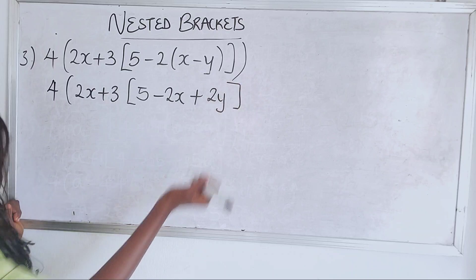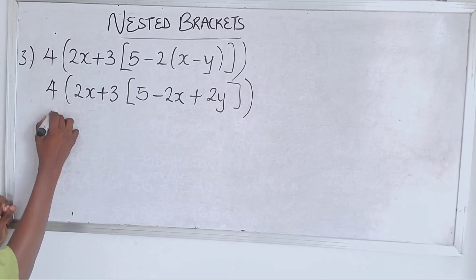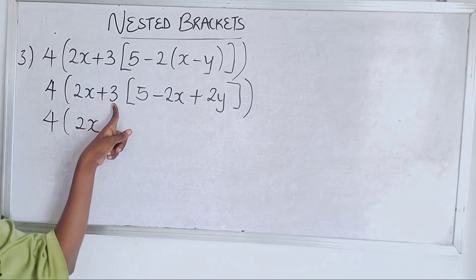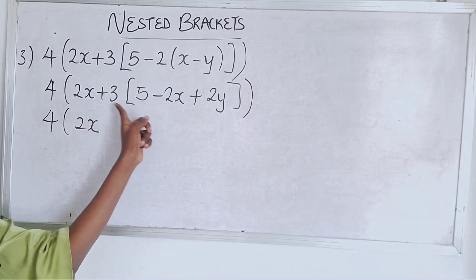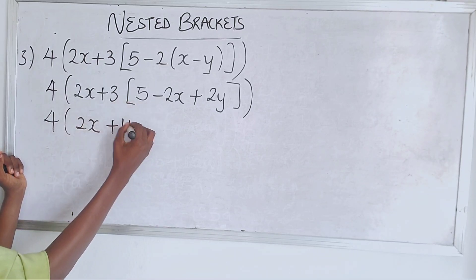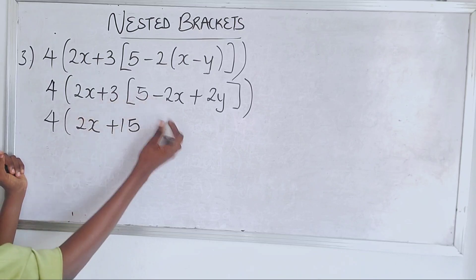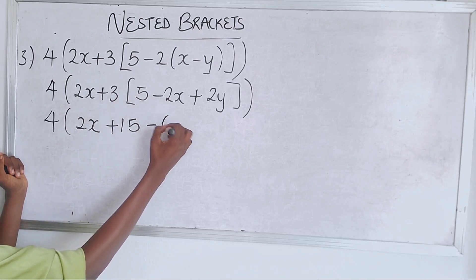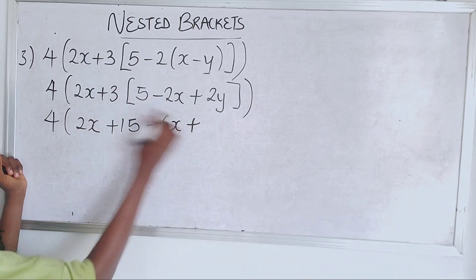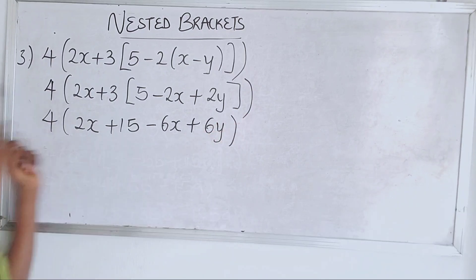Moving to the square bracket. We have two x from before. To open the square bracket, we use the number closest to it, which is plus three. Plus three times five is plus 15; plus three times minus two x — plus times minus is minus — gives minus six x; plus three times two y gives plus six y. We close with the final bracket since we're done with the square bracket.